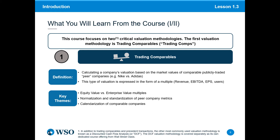Another key theme is going to be normalization and standardization of peer company metrics. Again, this is to make sure we can compare things on an apples-to-apples basis. As it applies to EBITDA or earnings per share, you may normalize figures and account for certain adjustments to make sure these can be compared apples-to-apples, like-for-like.